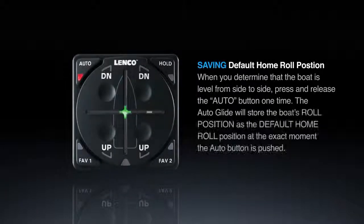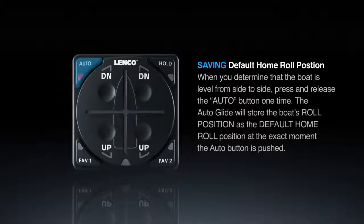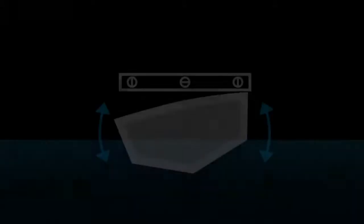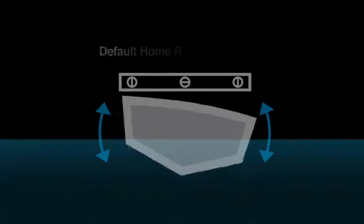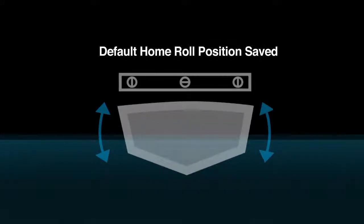When you determine that the boat is level from side to side, press and release the auto button one time. The auto glide will store the boat's roll position as the default home roll position at the exact moment the auto button is pushed.